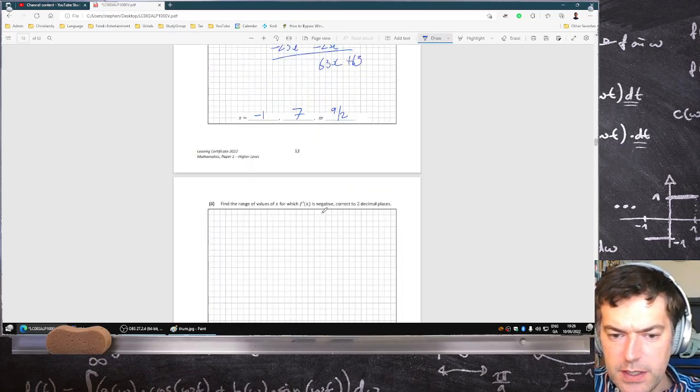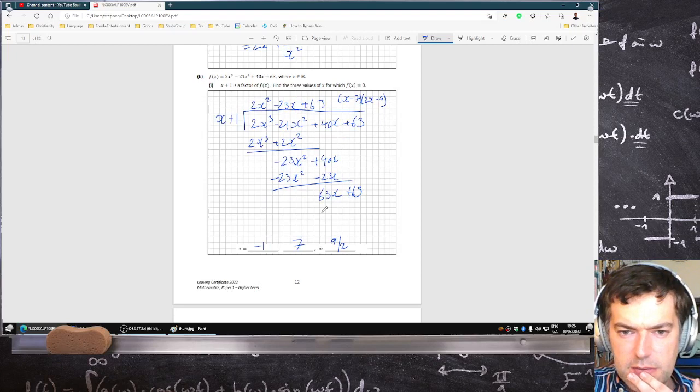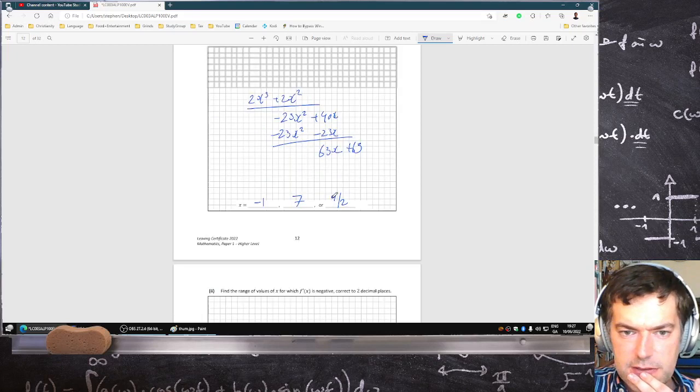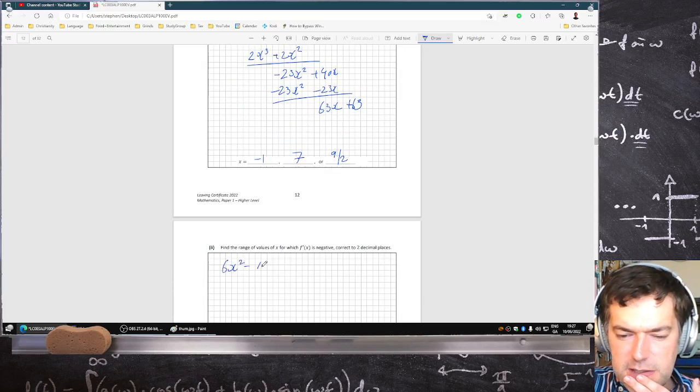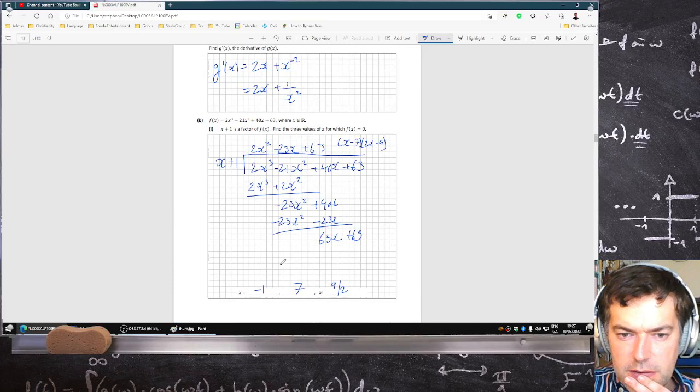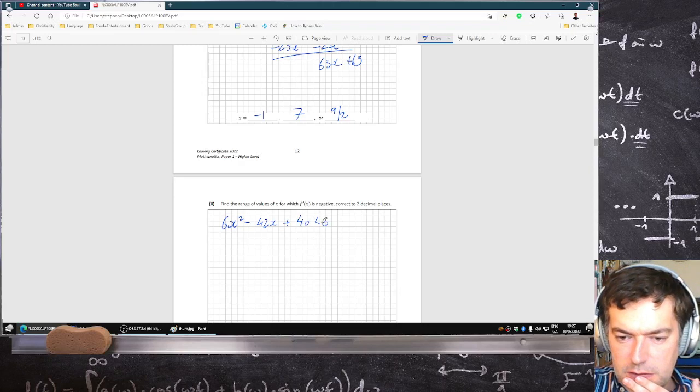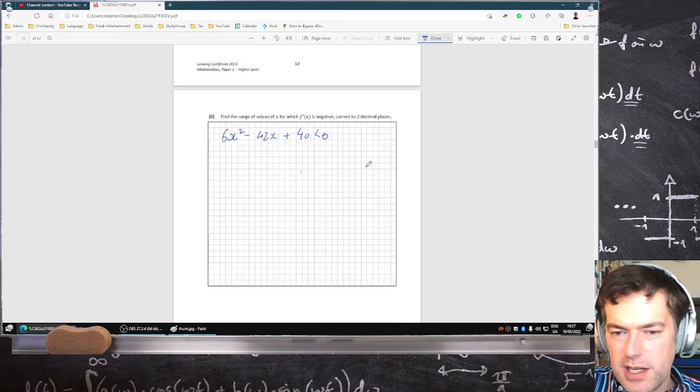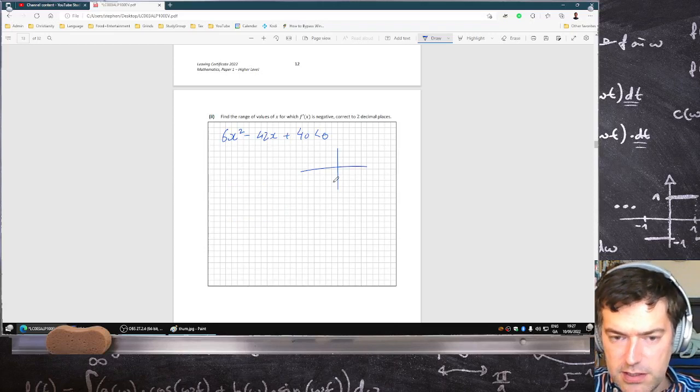That's good for part one. Find the range of values of f(x) for which f dash x is negative, correct to two decimal places. So the derivative to be negative. So the derivative would be 6x squared minus 42x plus 40 to be negative. Now, I know I'll have to use the quadratic formula because it says two decimal places. So using the quadratic formula here.